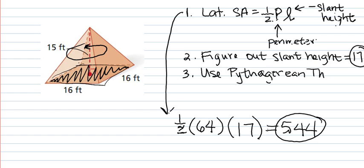We already found the area of the four triangles because we found the lateral surface area, which was 544, so that's why you have to watch the last video to know how to do that. So to find the total surface area,